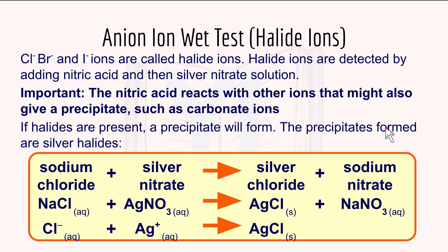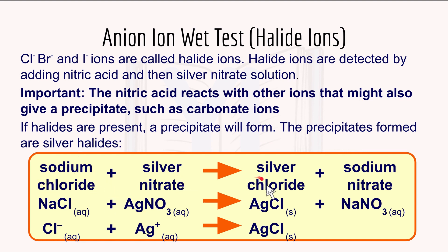Then we have the anion wet test for halide ions - chloride, bromide, or iodide ions are called halide ions and they are in Group 7. Halide ions are detected by adding nitric acid and then silver nitrate solution. The nitric acid reacts with other ions that might also give a precipitate, such as carbonate ions, eliminating false positives. If halides are present, a precipitate of silver halides will form. For example, a chloride ion with silver nitrate forms silver chloride AgCl, which is insoluble. It's a precipitation reaction, and you can write the ionic equation by cancelling out all spectator ions.